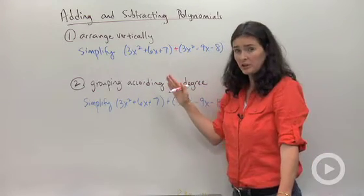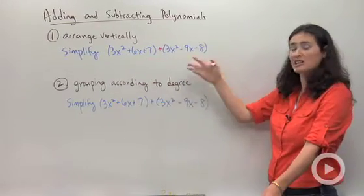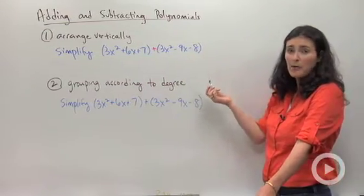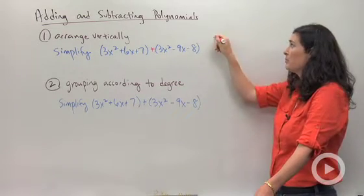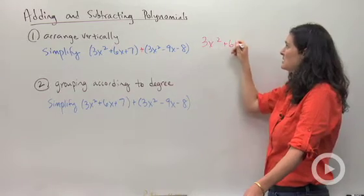Okay, let me show you how vertically these could be arranged. If I were to write these two trinomials on top of each other, it might help a visual learner to see how to add them. For example, here's my first trinomial, 3x squared plus 6x plus 7.